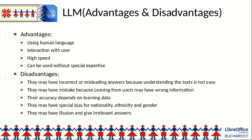Among the disadvantages, LLMs may provide incorrect or misleading answers because understanding text is not easy. Wrong interpretation of textual data can lead to generating wrong answers. Their accuracy depends on learning data. They may have mistakes because they learn from user feedback and users' information may have mistakes. LLMs may have special bias for nationality, ethnicity, and gender. They may have hallucinations and give irrelevant answers. But despite these weaknesses, many of these problems will be solved even with user feedback.